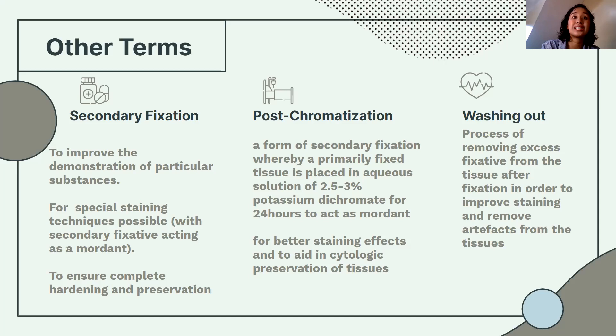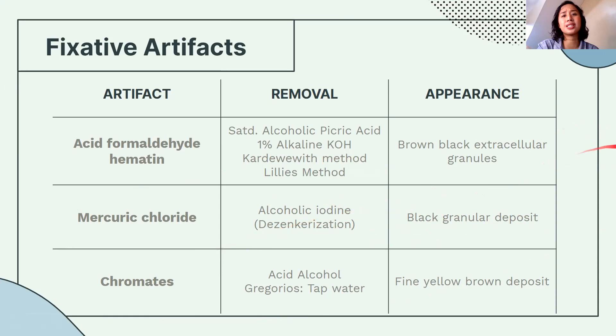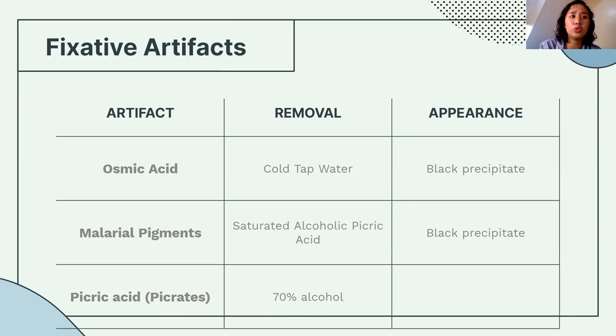Finally, these are fixative artifacts — please take note of them. We also have the term dezinckerization, which is the removal of the black granular deposit using alcoholic iodine. How to remove various artifacts: osmic acid pigments, malarial pigments, and picric acid artifacts all have specific removal methods.